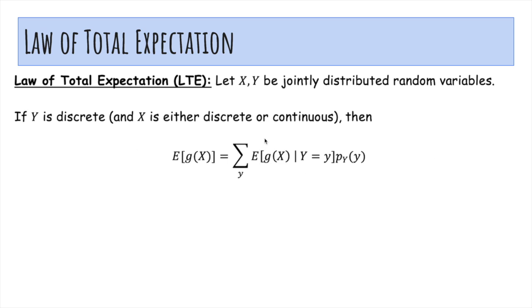So now the law of total expectation. It says if Y is discrete, then the expected value of g(X) is, I can take the expected value of g(X) in all the cases where Y equals y, and then weight it by the probability Y equals y. This is basically the law of total probability.